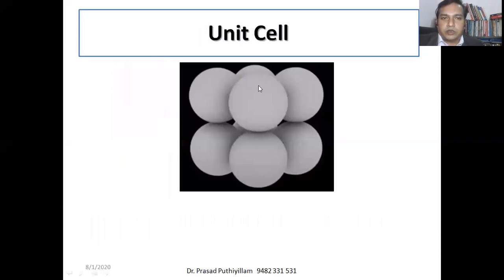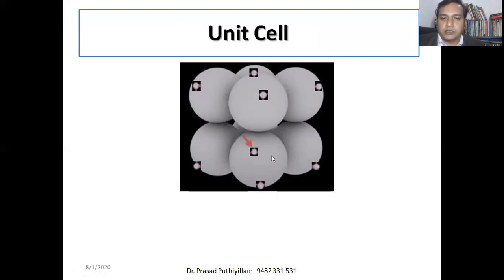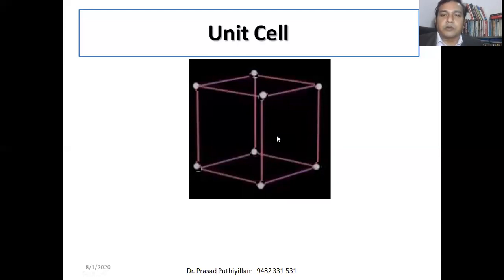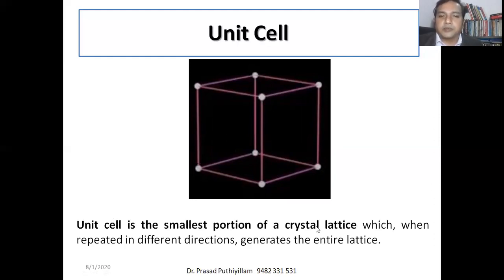In a crystal lattice, what is a unit cell? The dots represent atoms — the front atoms and the atoms behind them. If I remove the balls and connect those points with straight lines, it becomes a unit cell. A unit cell is the smallest portion of a crystal lattice, which when repeated in different directions generates the entire lattice.